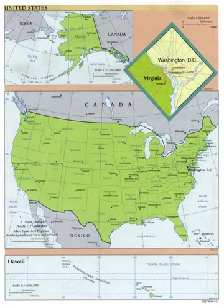Towns or townships are used as subdivisions of a county in 20 states, mostly in the northeast and midwest. Population centers may be organized into incorporated cities, towns, villages, and other types of municipalities. Municipalities are typically subordinate to a county government, with some exceptions.